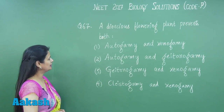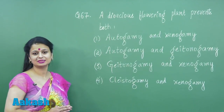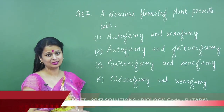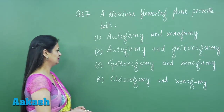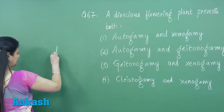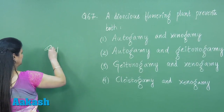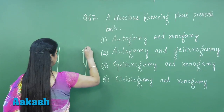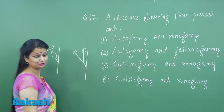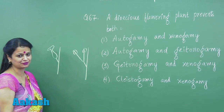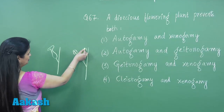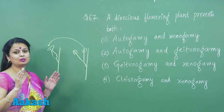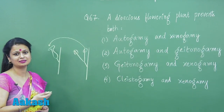Question number 67 is related to the dioecious plant. In the dioecious plant, one plant has only female flowers and the other plant has only male flowers. In pollination, there is transfer of pollen grains from the anther to the stigma. Here there is pollination between two flowers belonging to different plants — we call it xenogamy.